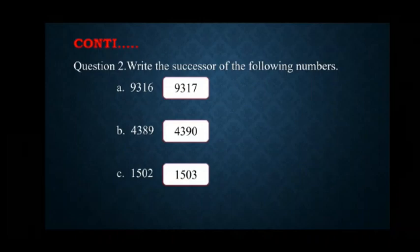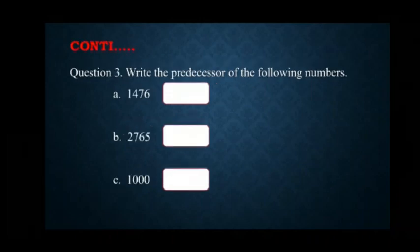Now, let's do the next question. That is question number 3 which is based on the predecessor. In question number 3, we have to write down the predecessor of the following numbers. Part A: 1476. The predecessor of 1476 is 1475.